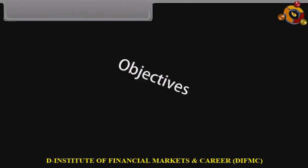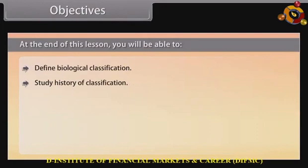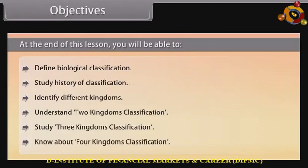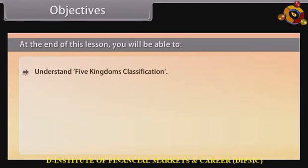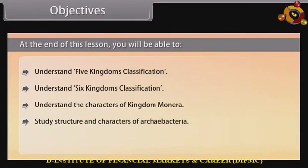Objectives: At the end of this lesson, you will be able to define biological classification, study the history of classification, identify different kingdoms, understand two kingdoms classification, study three kingdoms classification, know about four kingdoms classification, understand five kingdoms classification, understand six kingdoms classification, understand the characters of Kingdom Monera, and study the structure and characters of Archaebacteria and Eubacteria.